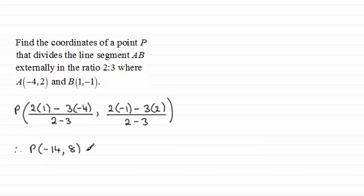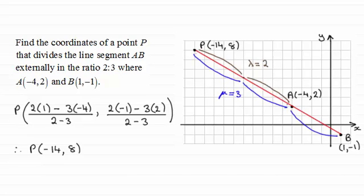Now if you've drawn a sketch beforehand, which I would encourage, you could then check to see whether this looked reasonable. Well, I've got the sketch here anyway. And you'll notice that we've got the line segment AB with coordinates minus 4, 2, 1, minus 1 respectively. And the point P is out here with coordinates minus 14, 8. So you can see that what we have got here is 2 parts to the 3 parts here, the ratio 2 to 3. So I hope that's been of use to you. And you can now divide a line segment AB externally in a ratio lambda to mu.